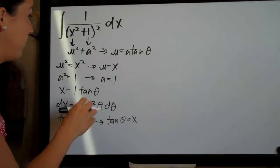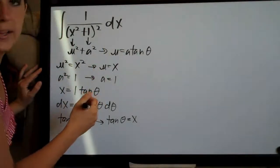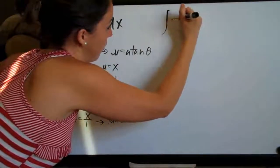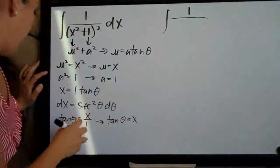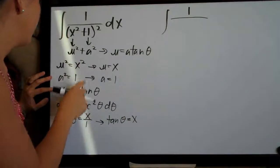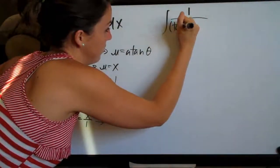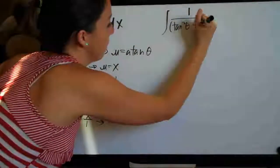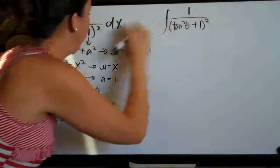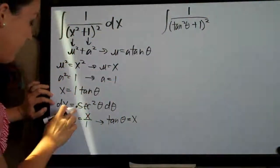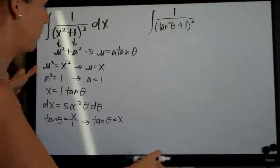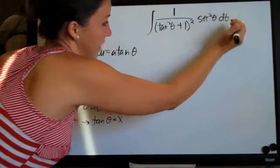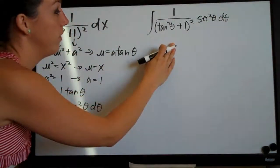Now we go ahead and substitute back into our original integral for x and for dx. We end up with the integral of 1 over tangent squared theta plus 1, that quantity squared, and then substituting in for dx, we put in secant squared theta d theta.